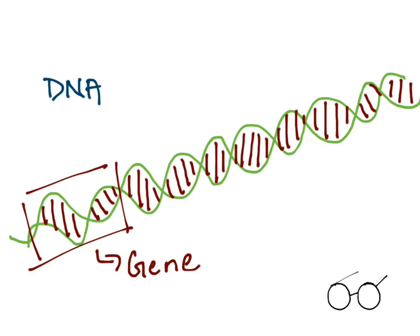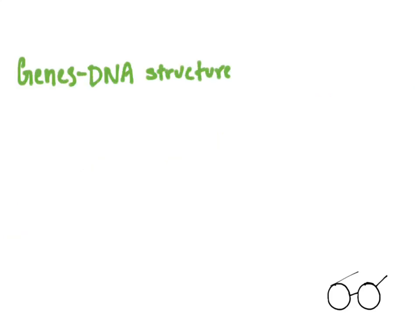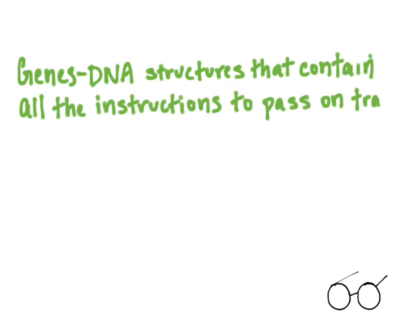That's pretty much what a gene is, and so that leads into our definition of a gene here, which is DNA structures that contain all the instructions to pass on traits during heredity. These different physical traits are configured to be able to be passed on during heredity, which is actually part of DNA itself, part of the definition of DNA itself.